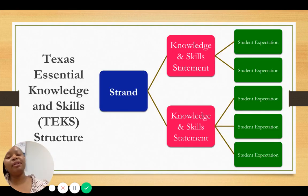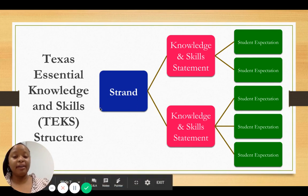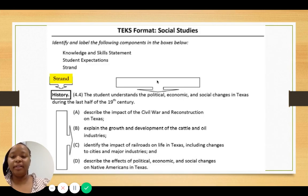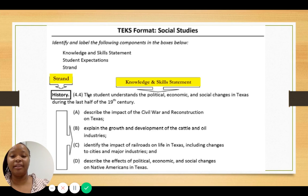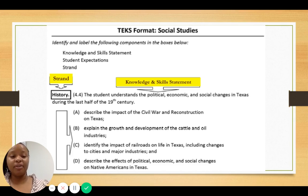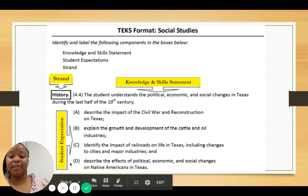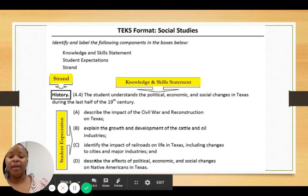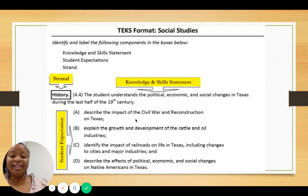TEKS are broken down into three components: the strand, which is the most general aspect; the knowledge and skill statement; and the student expectation. For example, in fourth grade history, the strand is 'History,' the knowledge and skill statement is the broad topic — 'the student understands political, economic, and social changes in Texas during the last half of the 19th century' — and the student expectation gets more specific, such as describing the impact of the Civil War and Reconstruction on Texas. We go from broad to most specific.